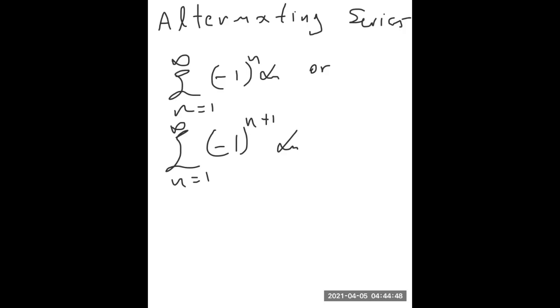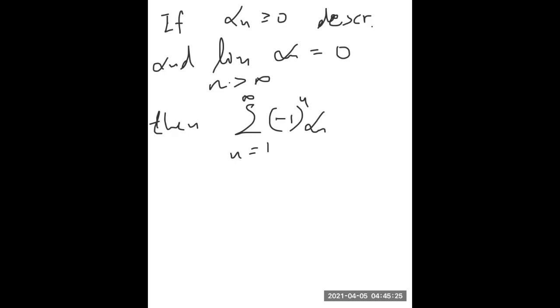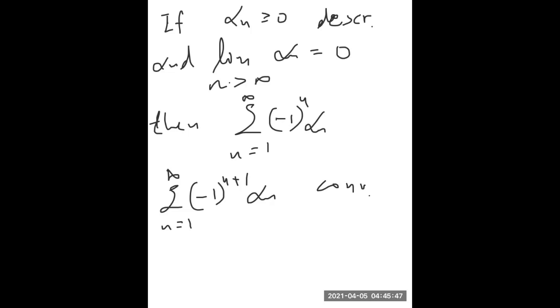We also have the alternating series test for convergence. If a_n is a positive (or at least non-negative) decreasing sequence, and the limit of a_n as n goes to infinity equals 0, then the alternating series converges. We only need to write one form, since one is the previous one times -1 — a multiplication by a constant — so if one converges, so does the other.